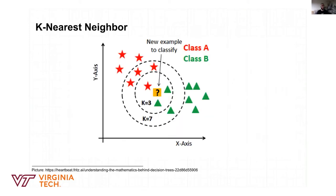Another interpretable model is K-nearest neighbor. In this model, we make predictions based on the closest data samples we have. If we have two classes — stars and triangles — and a new data point, we take the circle that includes the closest three data samples and take the majority. That means predicting it as a triangle. If we take the closest seven examples, we would classify it as a star. There are algorithms to find the best K that will work for your model.